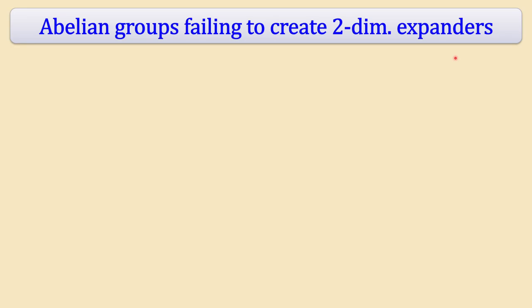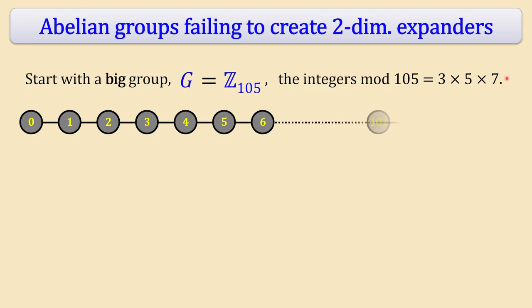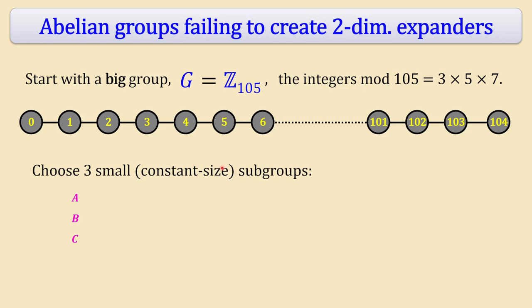To make two-dimensional expanders from groups, start with a big group G — in this example, the integers mod 105 under addition, where 105 = 3 × 5 × 7. Then pick three constant-sized subgroups A, B, C. Here: A = multiples of 35 (size 3), B = multiples of 21 (size 5), and C = multiples of 15 (size 7).